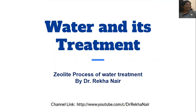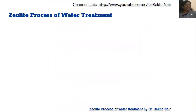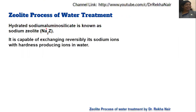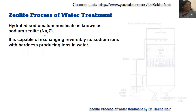We have a better residual hardness in the case of the zeolite process. In the zeolite process, we use zeolite — that is hydrated sodium aluminosilicate — which we write as sodium zeolite, Na₂Z. This is capable of reversibly exchanging its sodium ions with the hardness-producing ions in the water, meaning the sodium ions will be replaced by calcium and magnesium ions present in the water.